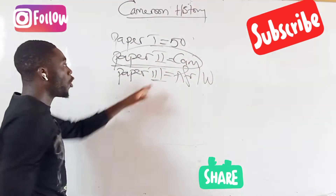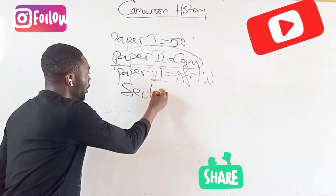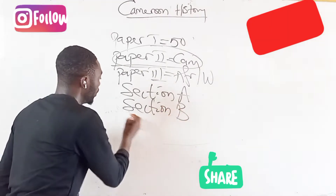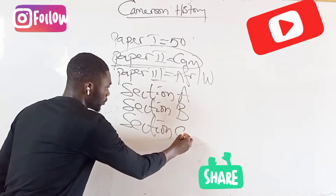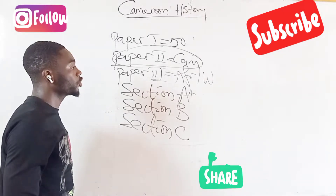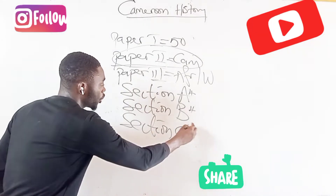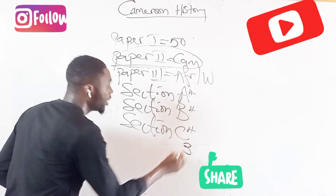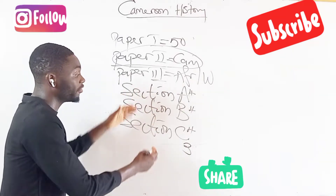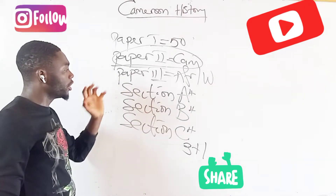In paper 2, we will be talking more of Cameroon history. Paper 2 is all about Cameroon history, which is divided into section A, section B, and section C. In the GCE, you will be given 4 questions in section A to choose one and answer, likewise section B and section C. Your fourth question will be selected from any of the sections available to you, giving you 4 questions total in history paper 2.